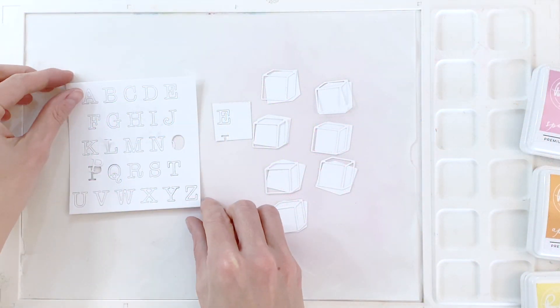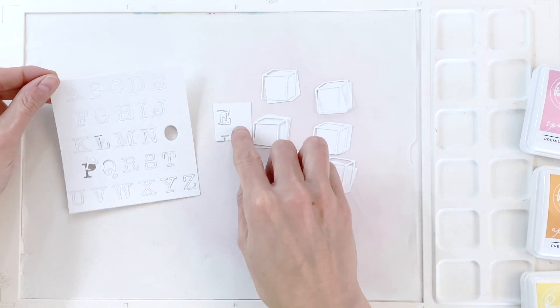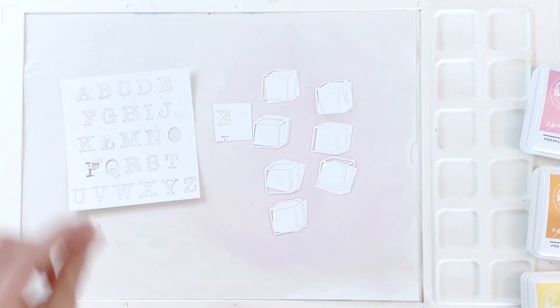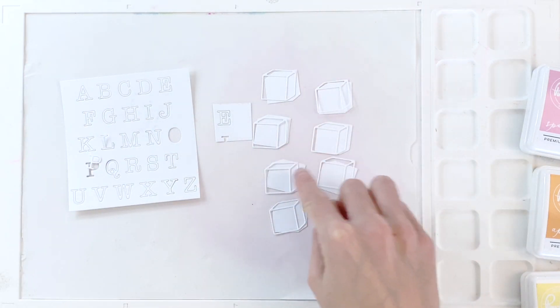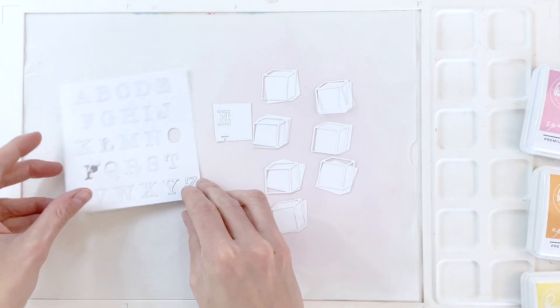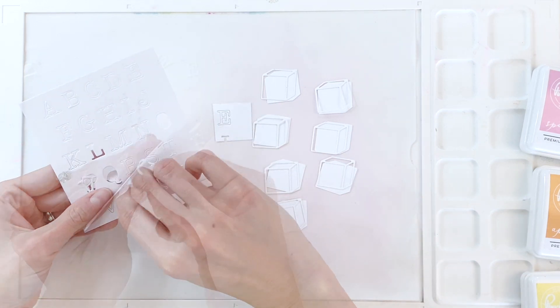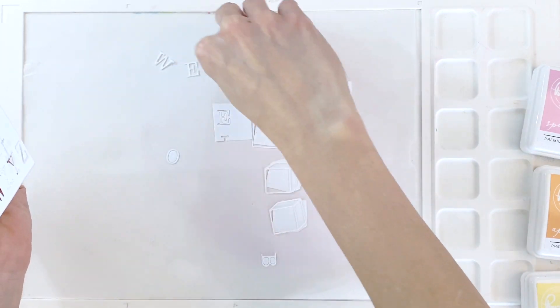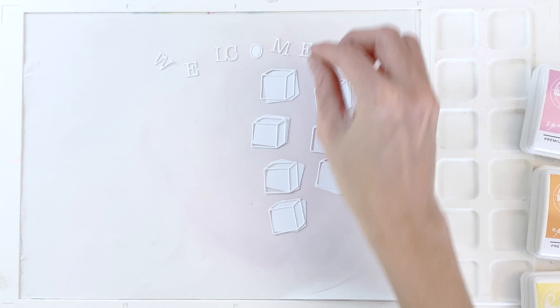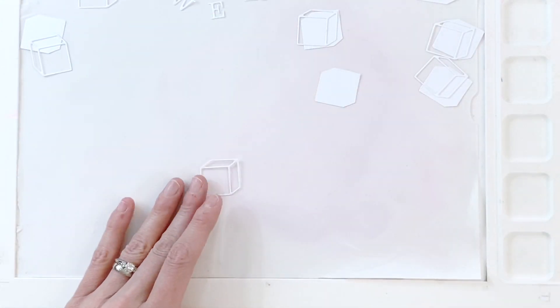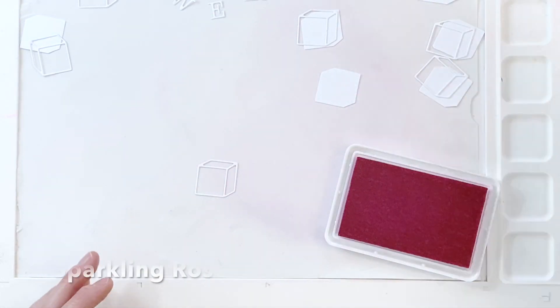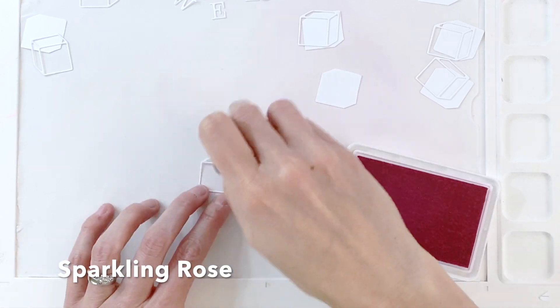I went ahead and die cut with the Little One Alpha Die the whole alphabet as well as a second E. I just used a little scrap of cardstock and die cut another E. I also die cut seven blocks and I die cut the outline of the blocks as well as seven of the backing for the blocks. I'm going to spell out welcome so I went ahead and popped out those letters and now I'm going to grab these blocks and do some ink blending.